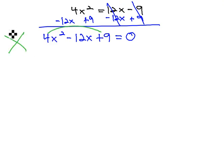AC, 4 times 9 is 36, and we want to add to negative 12. We can quickly see this is negative 6 and negative 6, and that's significant because we notice that those numbers match.